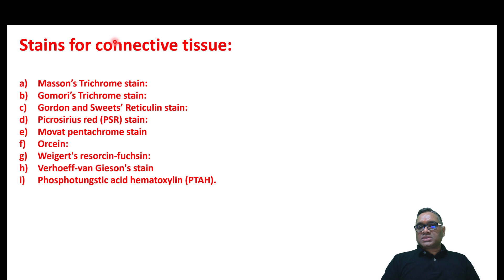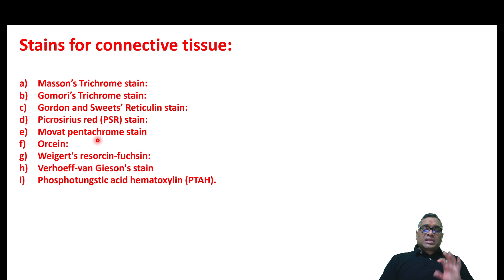So let's start about special staining. The connective tissue special stains I am going to discuss are: Masson trichrome, Gomory trichrome, Gordon and Sweet's reticulin stain, Picro-Sirius red stain, Movat's pentachrome, Orcein, Weigert's resorcin-fuchsin, Verhoff von Gieson stain, and Phosphotungstic acid hematoxylin.